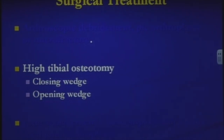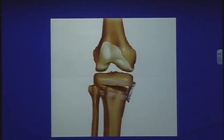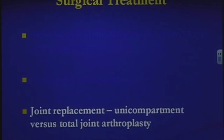High tibial osteotomy is a possible option for younger patients we feel are too young for joint replacement. We cut the bone and shift weight-bearing from the arthritic side to the non-arthritic side. There are two techniques: closing wedge and opening wedge. In the closing wedge, we remove a wedge of bone wider on the lateral side, shift the bone laterally, and use a plate to close the gap, switching weight from medial to lateral. In the opening wedge, we cut the bone, push it open, bone-graft that area, and again switch the weight from medial to lateral.